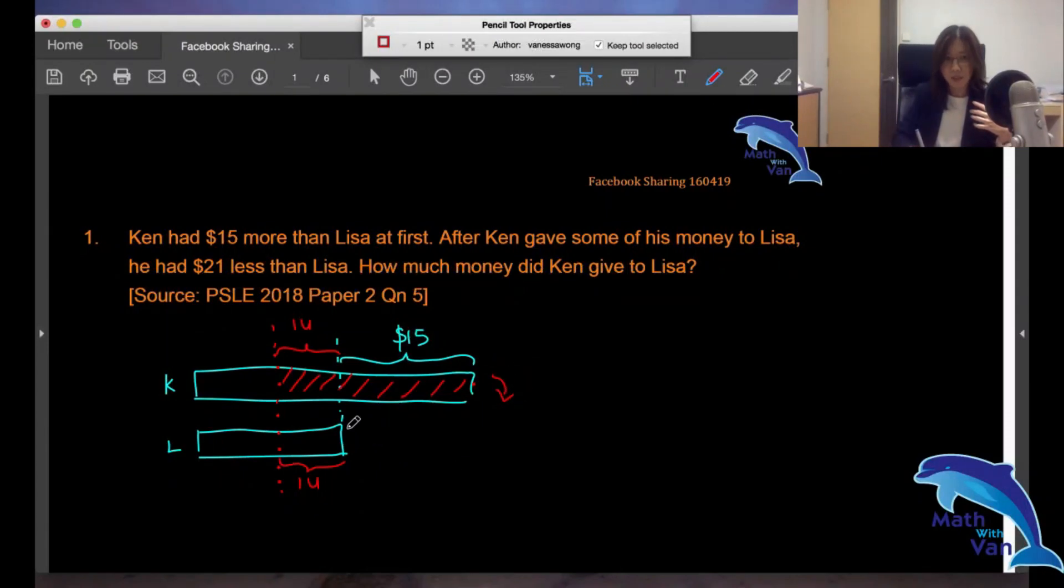If that's the case, what happens now? I would have to do the change. This part, the one unit, plus $15 brings down. So this is the $15, and in the end Ken had $21 less.